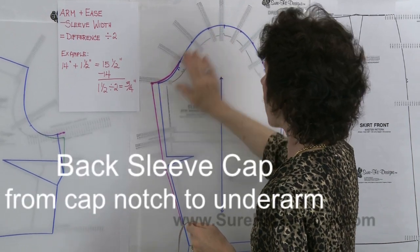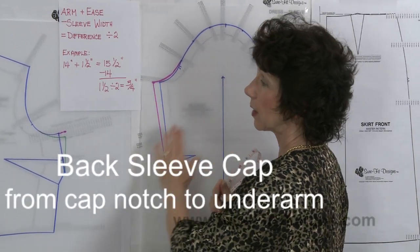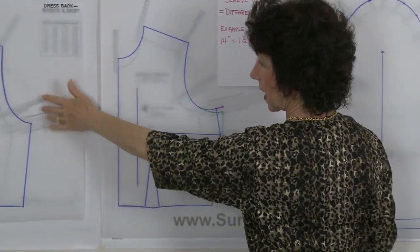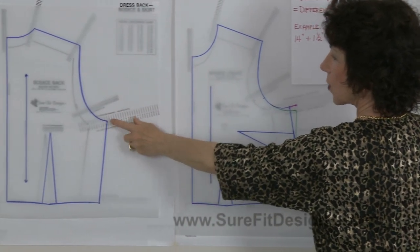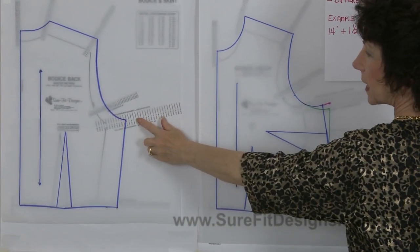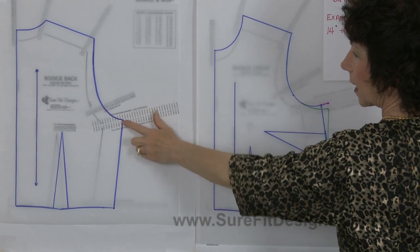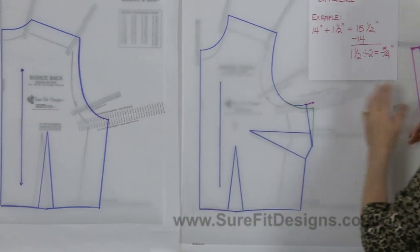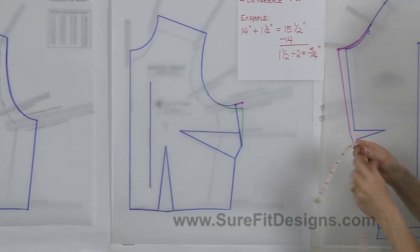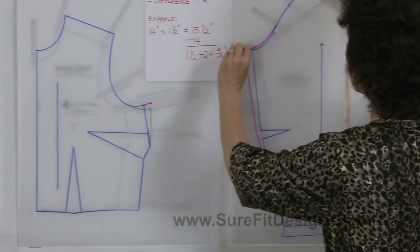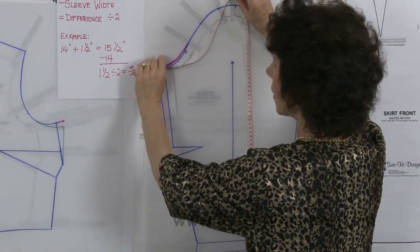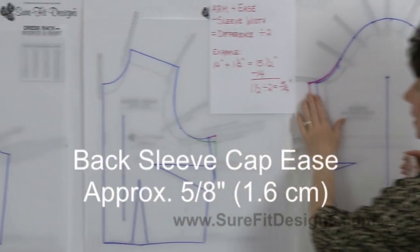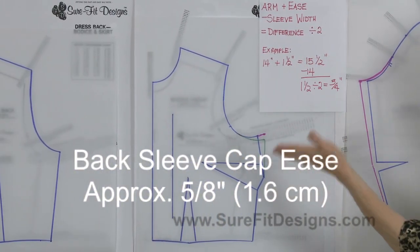And the other thing that you would need to check is to measure from your sleeve cap notch to your underarm on the back of the bodice and compare that to the back bodice of your dress pattern or bodice pattern. Remember this is going to have been extended out three quarters of an inch or dropped a half and come out about five eighths of an inch. What you want to do is make sure that this dimension from your sleeve cap notch to the underarm is only about five eighths of an inch longer than whatever your back bodice arms eye is.